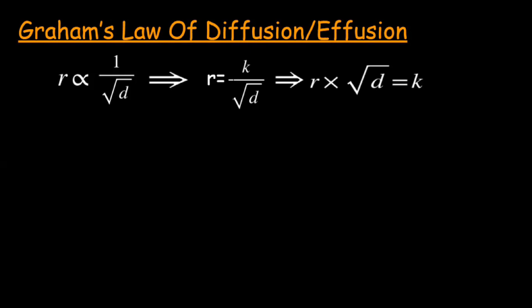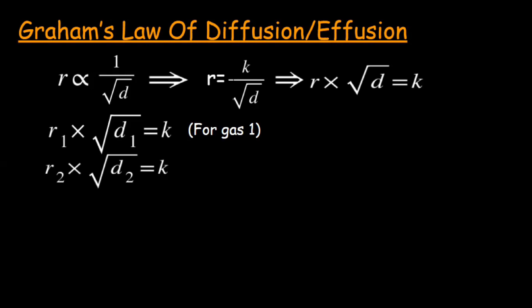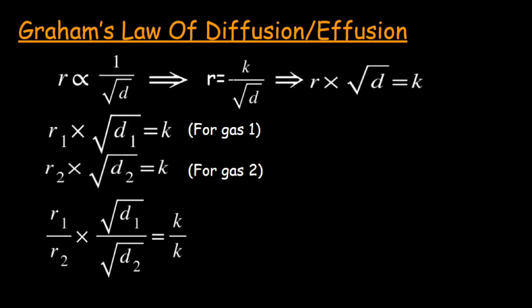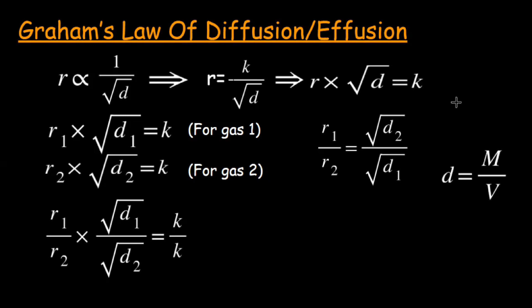Graham's equation for gas one: r₁ × √d₁ = k. For gas two: r₂ × √d₂ = k. Dividing both equations, k cancels out to give one. Bringing √d₁ and √d₂ to the right side and inverting, the equation becomes: r₁/r₂ = √d₂ / √d₁. Since density is related to molar mass as d = m/v...